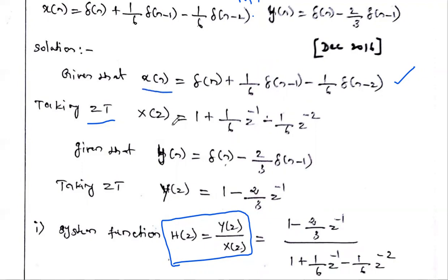The Z-transform of the impulse signal δ(n) is 1. Plus (1/6) times — what is the Z-transform of the delayed impulse? According to the time-shifting property of the Z-transform, if δ(n) has Z-transform equal to 1, then δ(n−1) has Z-transform z^(−1) times 1.